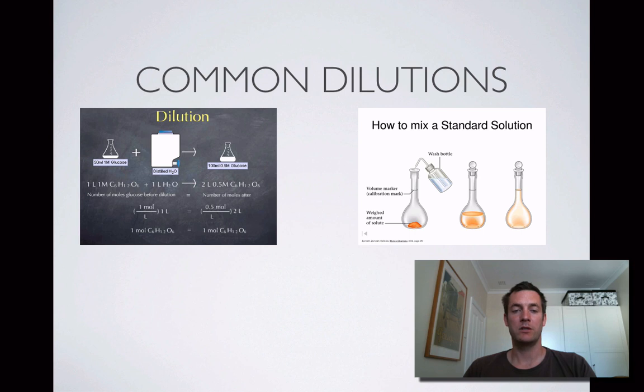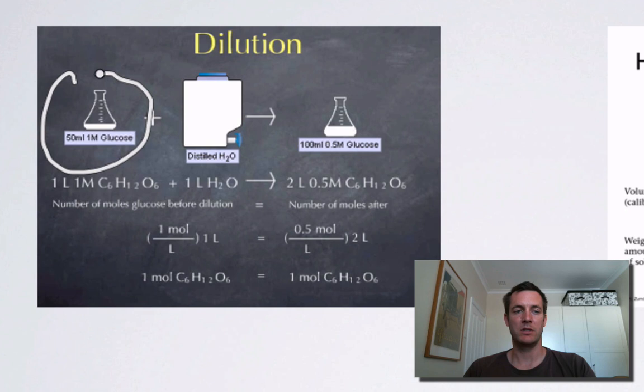Why do we bother doing these kinds of problems? Well, because in chemistry we're in all sorts of different situations where we're diluting things. Here we've got an example where we're starting off with a particular concentration of glucose solution, we want to end up with a different concentration, so we need to know how much water we're going to have to add.